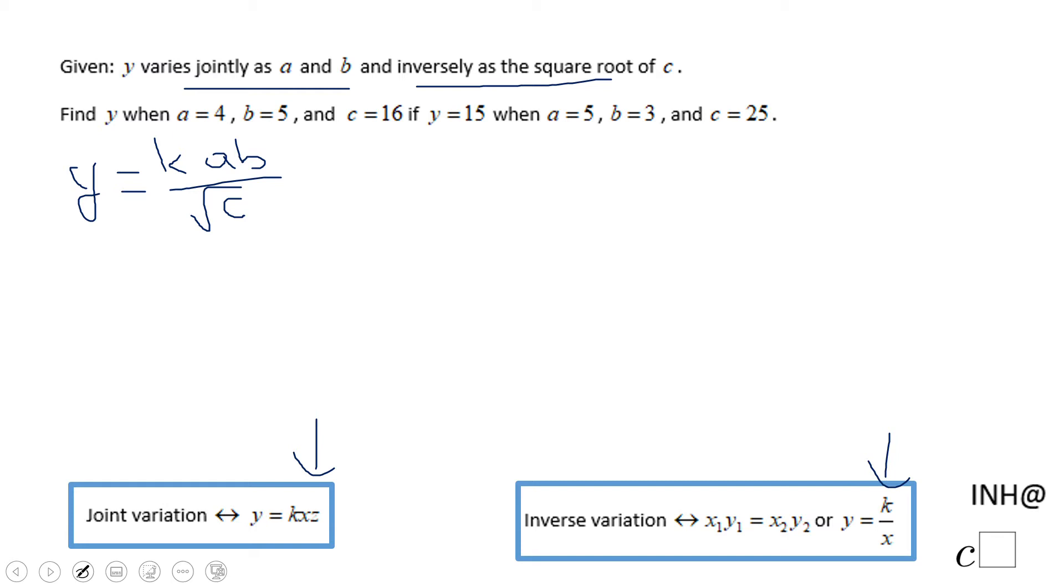The first step is to find k using the last part of the problem which says y equals 15. So I'm going to substitute 15 for y. K is a constant we need to find out. When a is 5, b is 3, and c is 25, let's simplify what we have here.